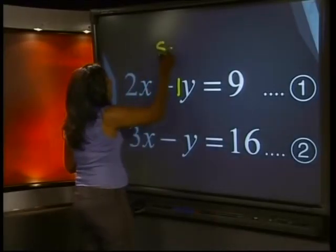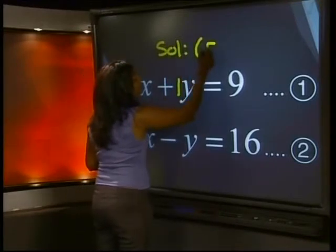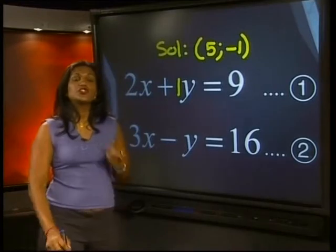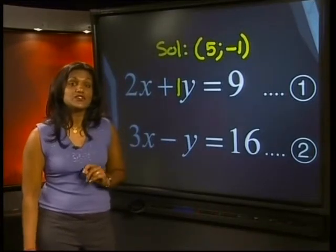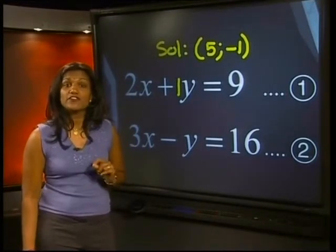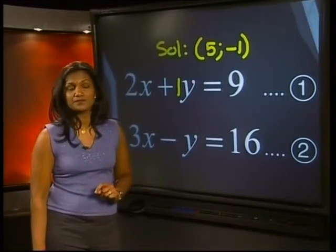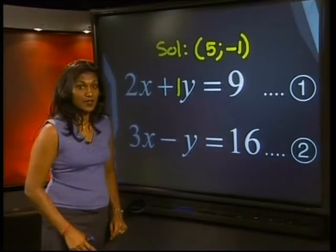We have found our solution. It is the ordered pair (5, -1). Now remember that you should check to see if x equal to 5 and y equal to negative 1 does in fact satisfy both the original equations. Now that was easy enough, but look again.